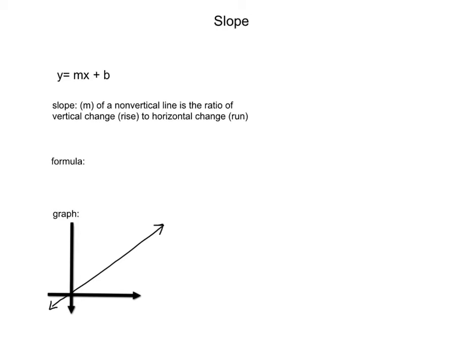Specifically as the m in that formula, as you can see in the definition here, slope, or m, of a non-vertical line is the ratio of vertical change to horizontal change. And you'll see that's rise and run, which I will explain.